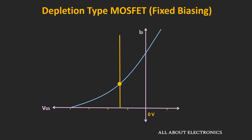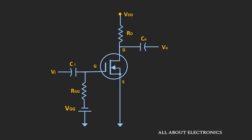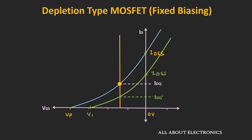The operating point in the fixed bias configuration is very susceptible to changes in MOSFET parameters. For any MOSFET, the values of IDSS and VP can vary within a certain range, meaning two similar MOSFETs can have different values of IDSS and VP. If we replace the MOSFET with another of the same type, the variation in the operating point should be minimum. The red curve shows maximum values and the green curve shows minimum values of IDSS and VP, giving the maximum variation in drain current in the worst case.